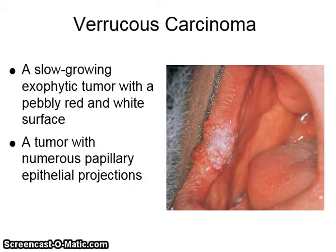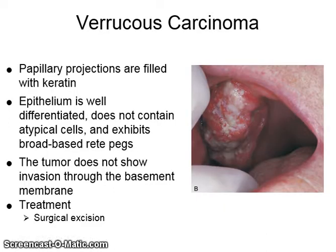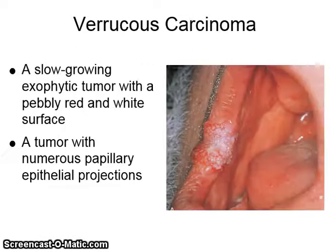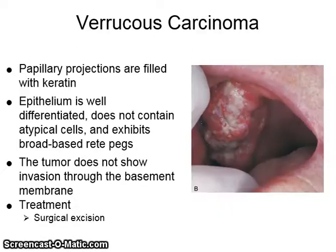Verruca's carcinoma is a slow-growing exophytic tumor with a pebbly red and white surface. It is a tumor with numerous papillary epithelial projections, such as in the image on the right in the commissure of the lip. The papillary projections are filled with keratin, and the epithelium is well differentiated and does not contain atypical cells.